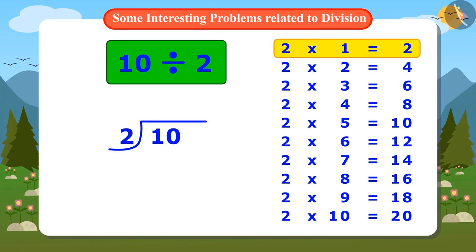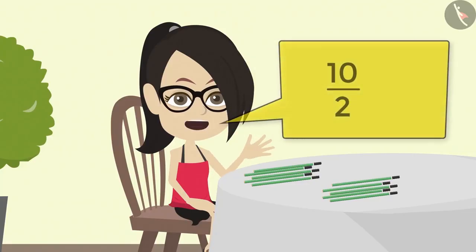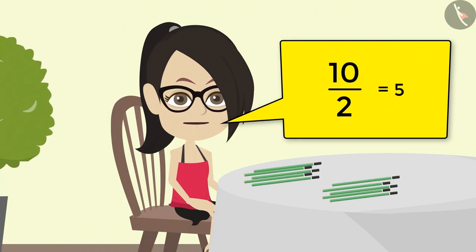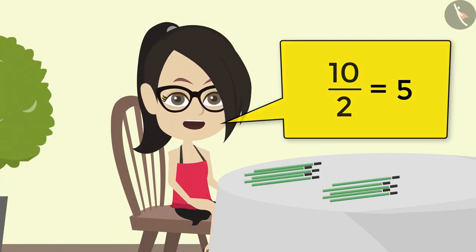2 ones are 2. 2 twos are 4. 2 threes are 6. 2 fours are 8. 2 fives are 10. That is, 2 times 5 is 10. The answer is 5 when 10 is divided by 2. Let's tell mummy.